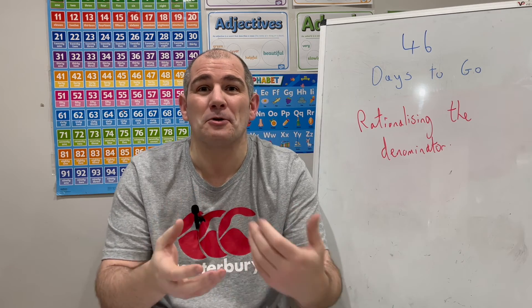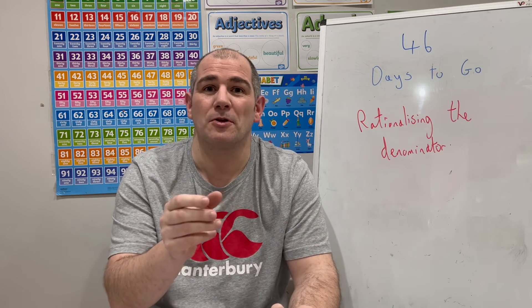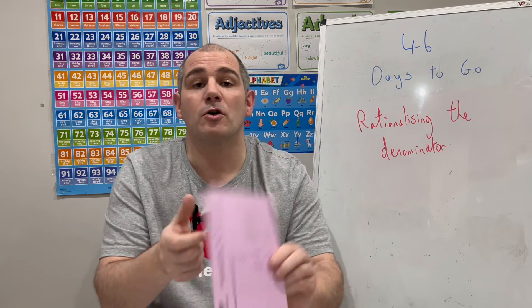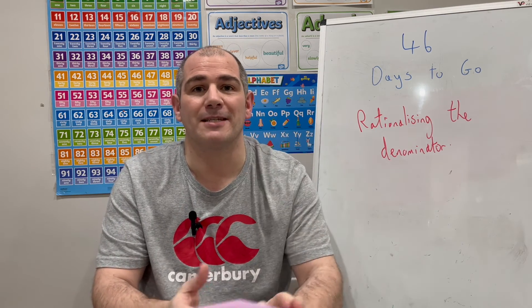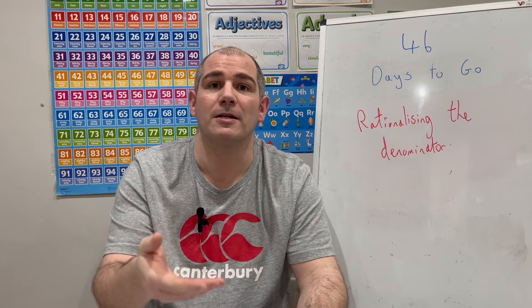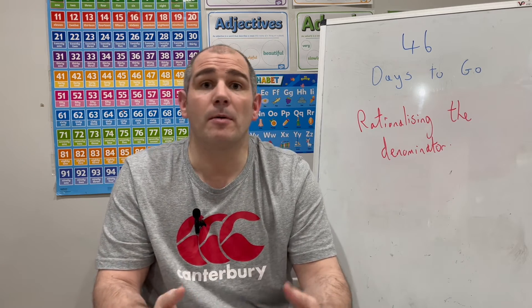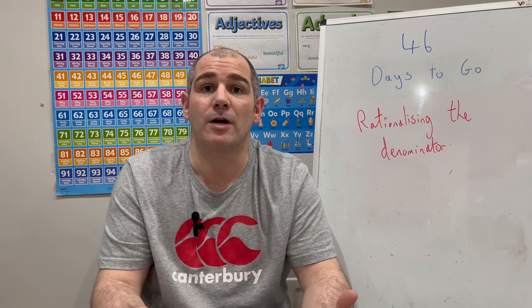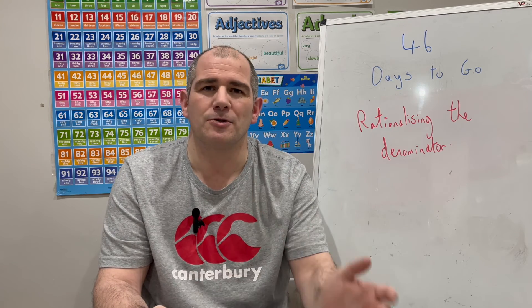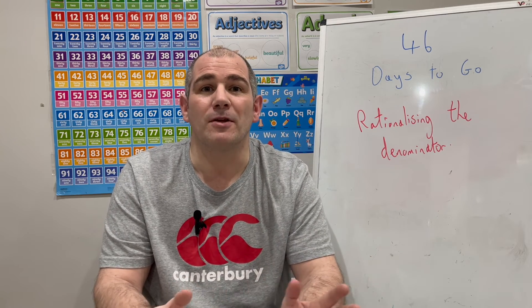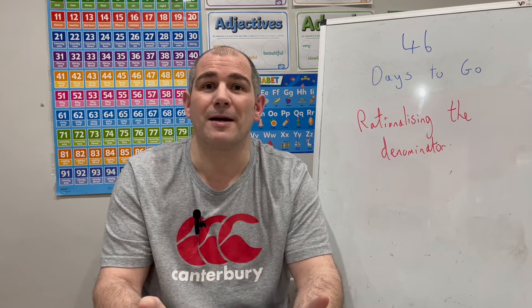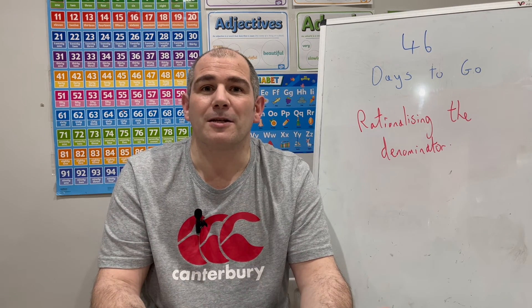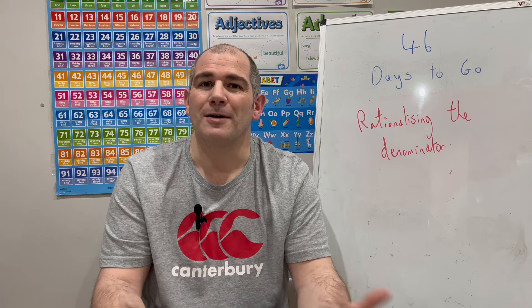Whenever you've got a fraction, it's not normal to leave a surd in the denominator — we tend to want to rationalize the denominator. If you've got the Corbettmaths Revision cards, card number 76 covers how to rationalize denominators. In this video I'm going to go through it, give you some questions to try yourself, and there's a link to practice questions in the description below.